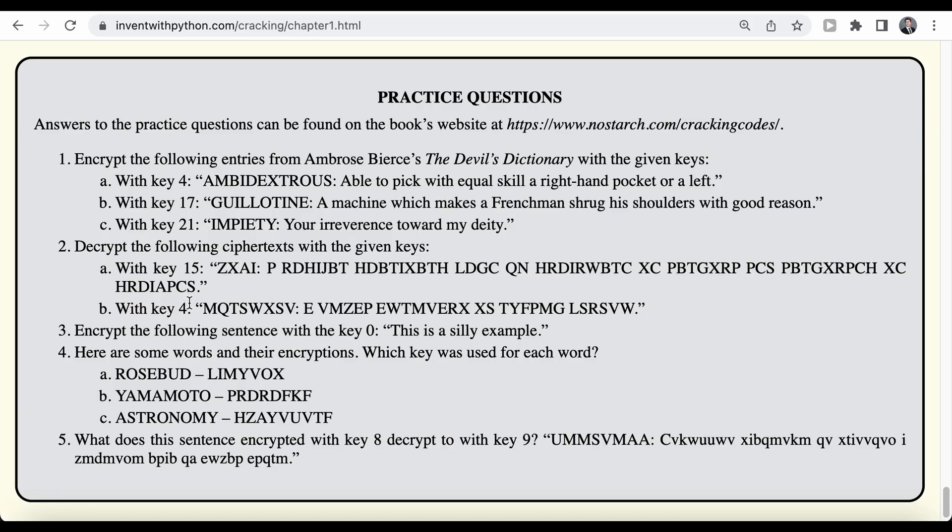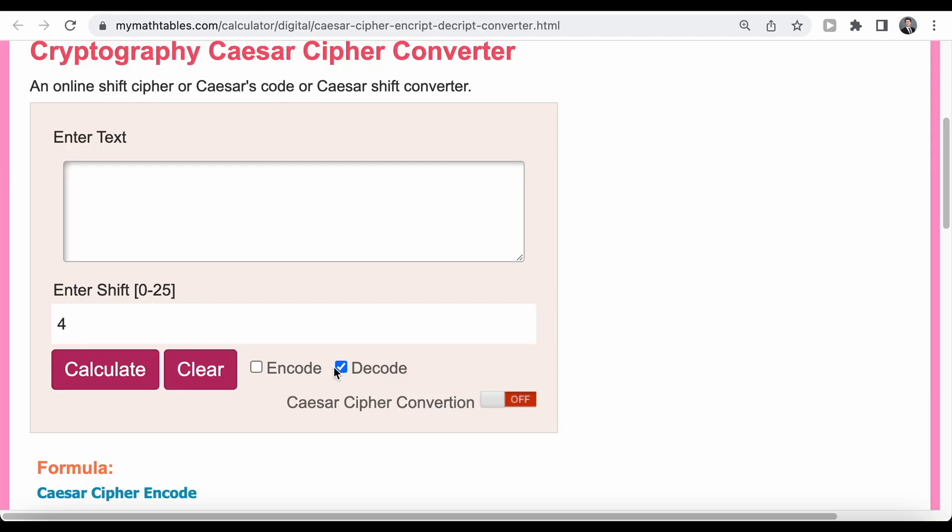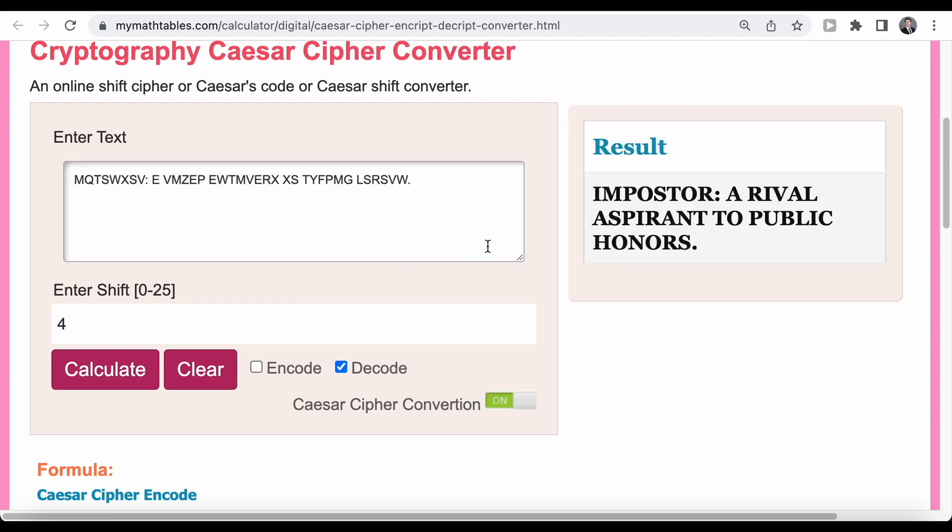And then we can see the result is this killed costume, sometimes worn by Scotchman in America and Americans in Scotland. And then of course, we have a second message that we can decrypt this time with key four. So again, we're going to select decode a key of four. And we can type in our text. And once we click on calculate, we can see this is a result imposter arrival as brand to public honors.